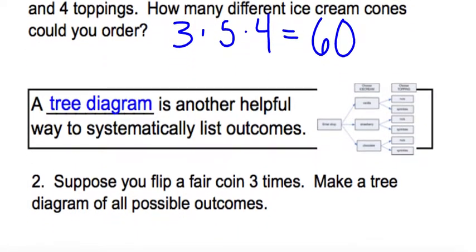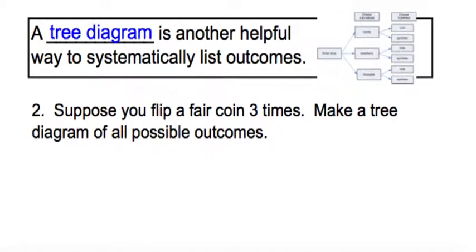Another way to organize our data is with a tree diagram, and it can sometimes help out if we're having trouble thinking through the logical structure of it. For example, if you flip a fair coin three times, we want to know the tree diagram of all possible outcomes.